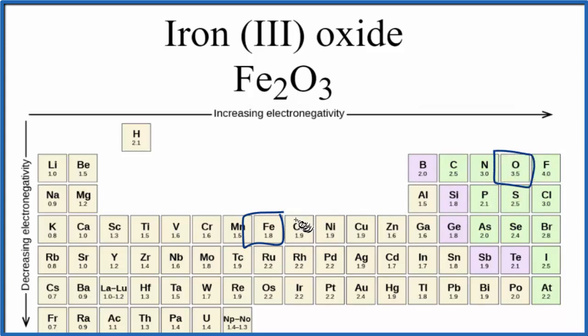So 3.5 minus 1.8 that gives us a difference of 1.7. So our electronegativity difference between Fe and O is 1.7.